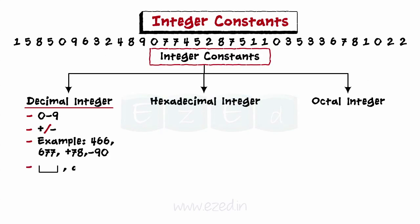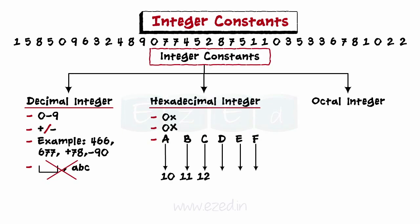Embedded spaces, commas, and non-digit characters are not allowed in integers. Hexadecimal integers are integers preceded by 0x or 0X. They may also have alphabets from A to F in lower as well as uppercase. A to F represent digits from 10 to 15.